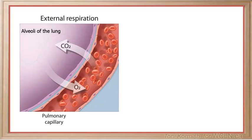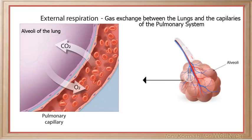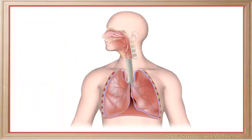External respiration refers to oxygen from outside of the body crossing cell layers into our bloodstream. It refers to gas exchange between the lungs and the capillaries of the pulmonary system. Think about what we want to gain at the lungs and what we want to get rid of — obviously we want to gain oxygen and get rid of carbon dioxide.